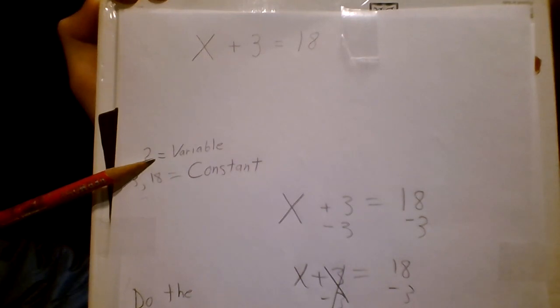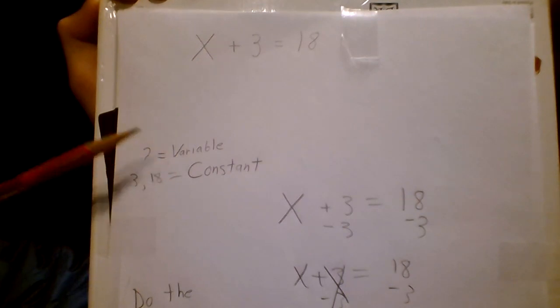Firstly, no matter if it's x or any letter in the alphabet, it will always be called the variable or the unknown.